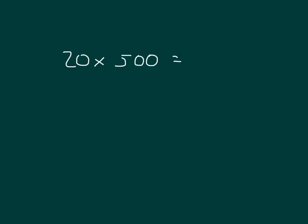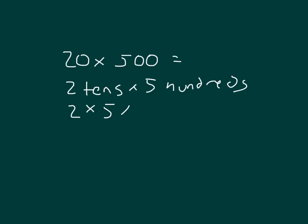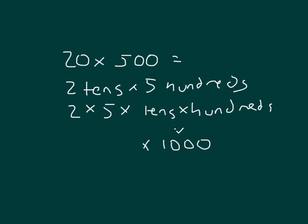These numbers are getting a little bigger, but we can think about it much the same way. We have 2 tens times 5 hundreds. We take 2 times 5, and then we have tens times hundreds. 10 hundreds is equal to 1,000. 2 times 5 is 10, and we're thinking about 10 thousands — 10 times 1,000 is 10,000. So 20 times 500 is 10,000.